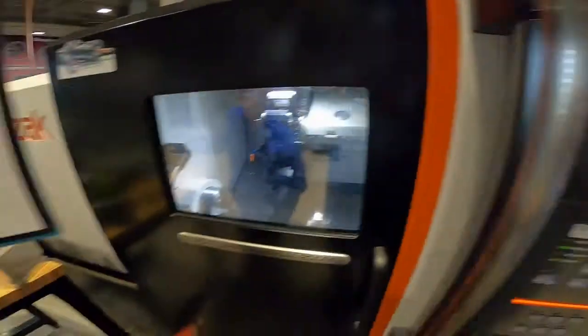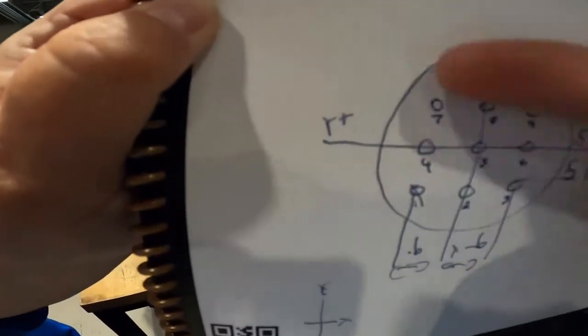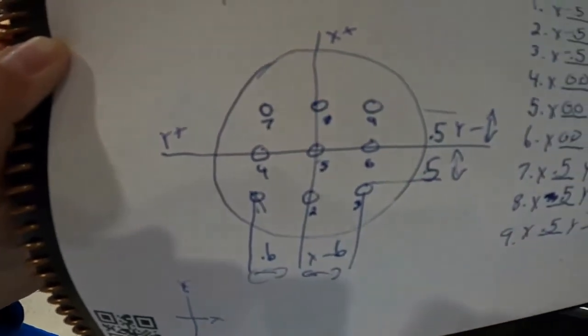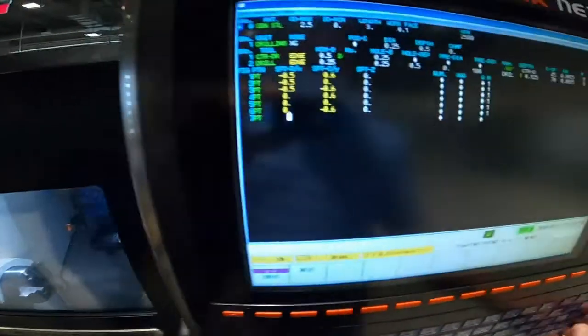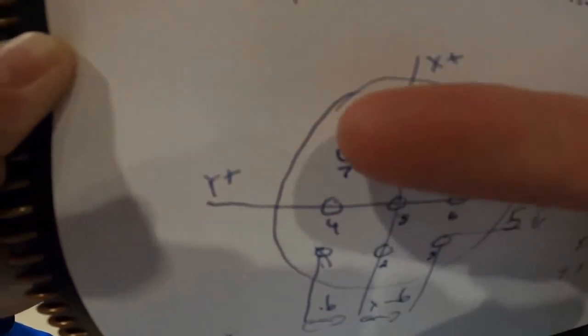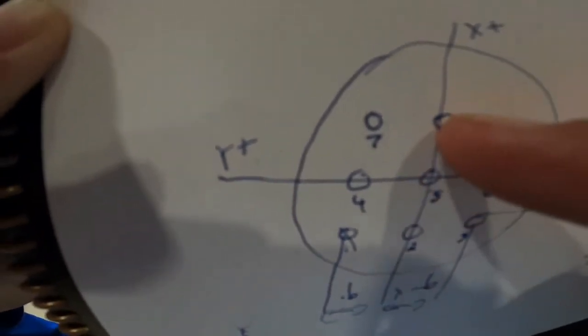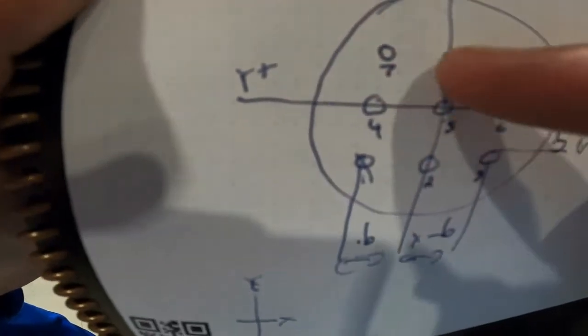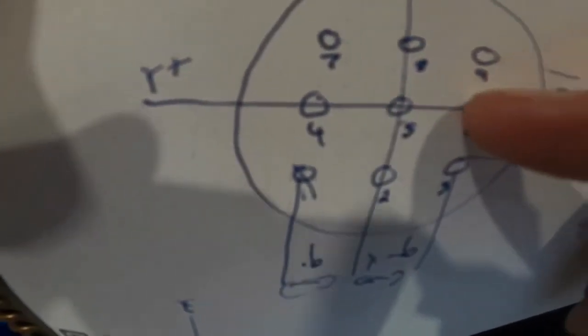We only have three more to do, almost done. Now seven — our X coordinate was at negative 0.5, then zero, now we're going to be at positive 0.5. So seven is going to be X positive 0.5 and Y positive 0.6. The next point — number eight — X is going to be positive 0.5, and number nine is also X positive 0.5.